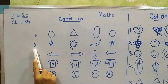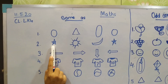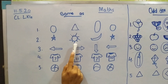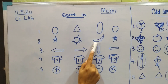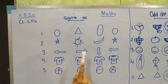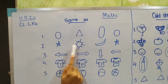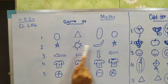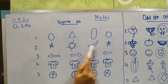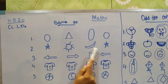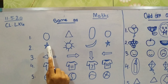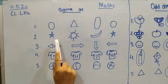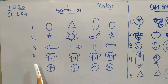Number two: the star, sun, moon, and star. So is this same? No. Is star and moon the same? No. These two stars are the same. So we will color these two stars.